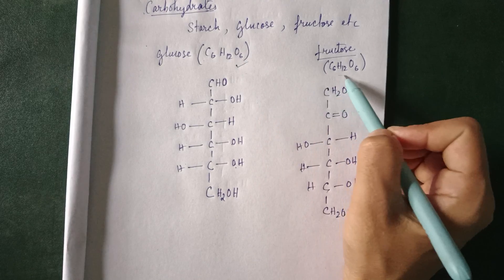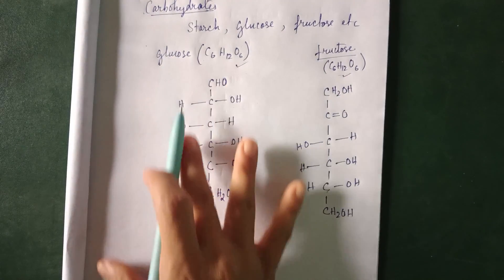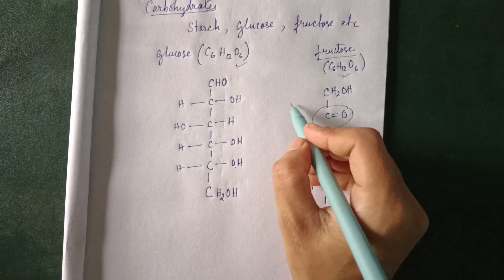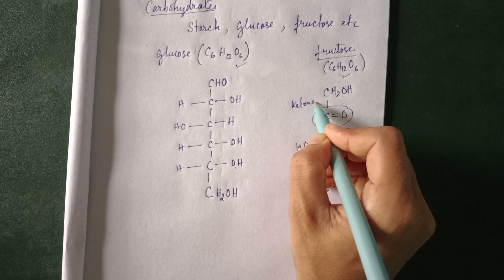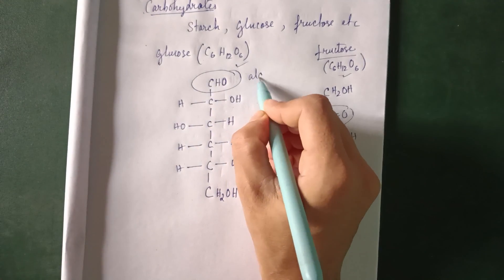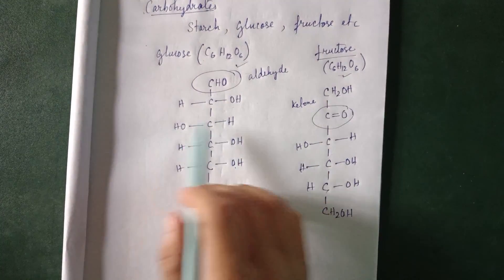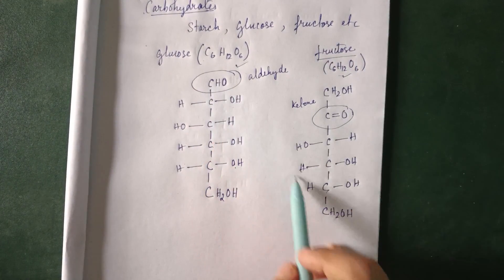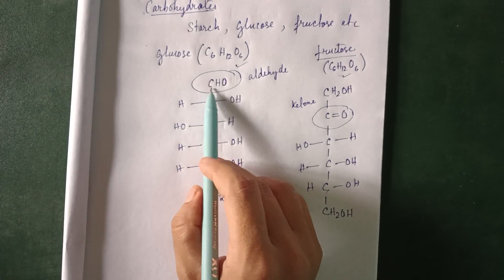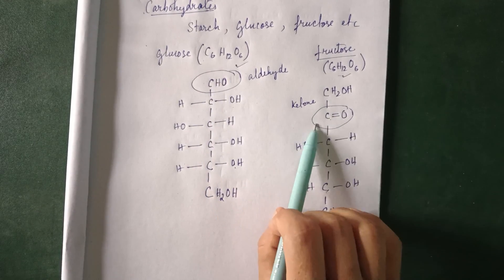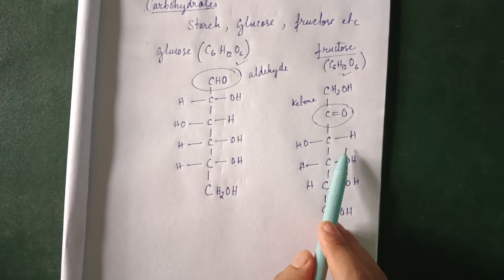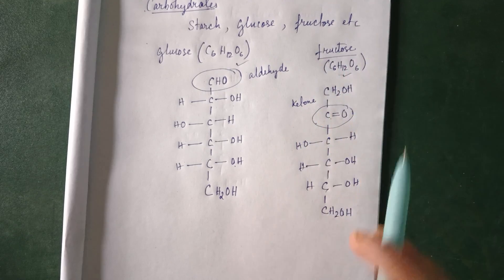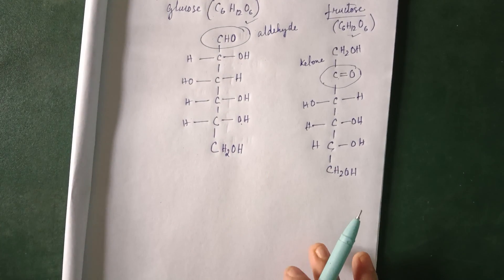Now see — these two compounds have the same chemical formula, C6H12O6, but the structures are different and the functional groups are different. In fructose the functional group is the ketone, and in glucose the functional group is the aldehyde. So fructose and glucose are isomers — specifically functional isomers, because they differ in their functional group. So these are the Fischer projection forms of glucose and fructose.